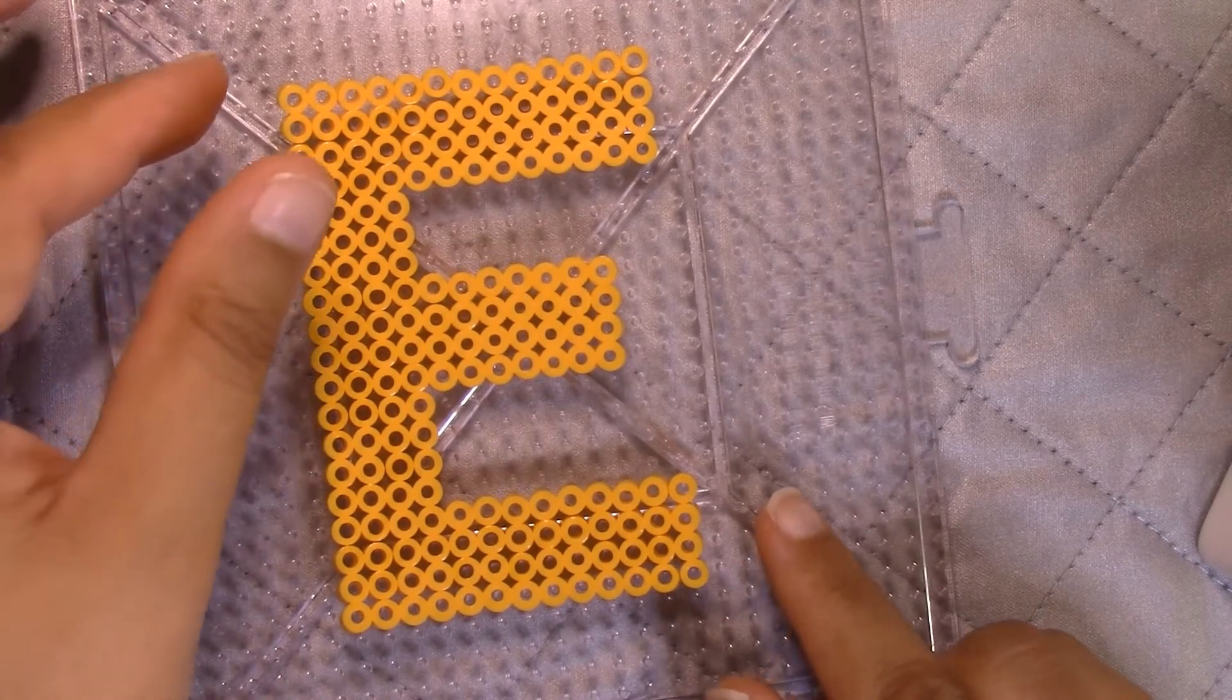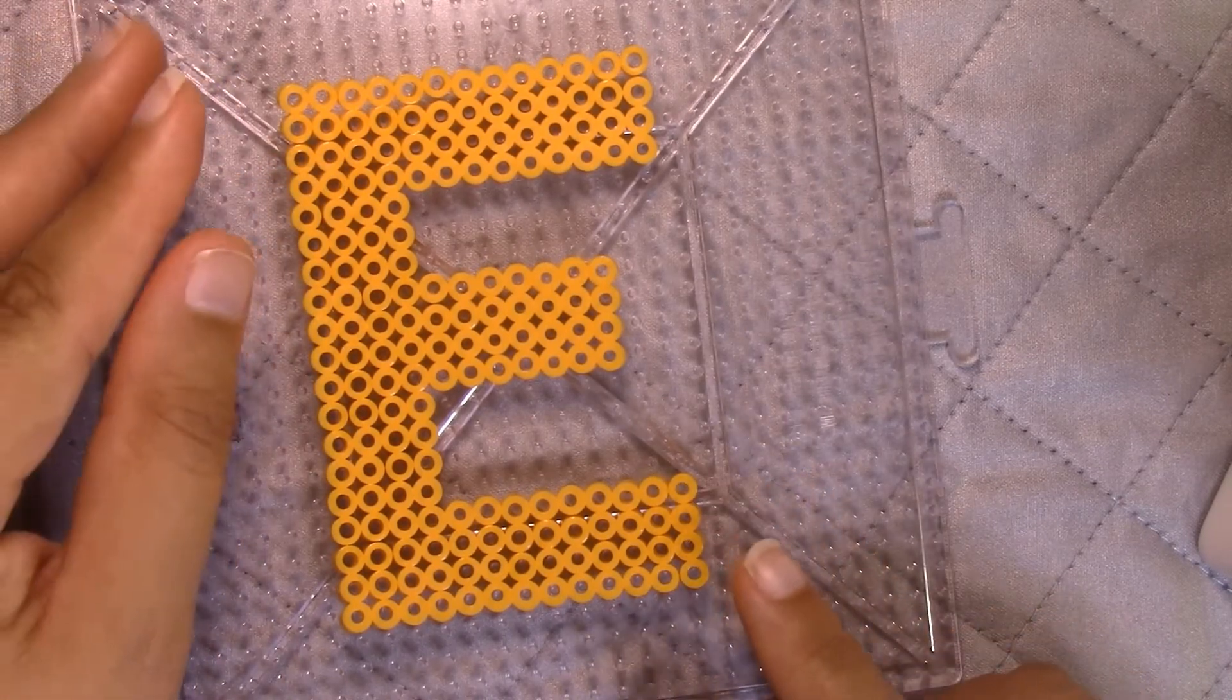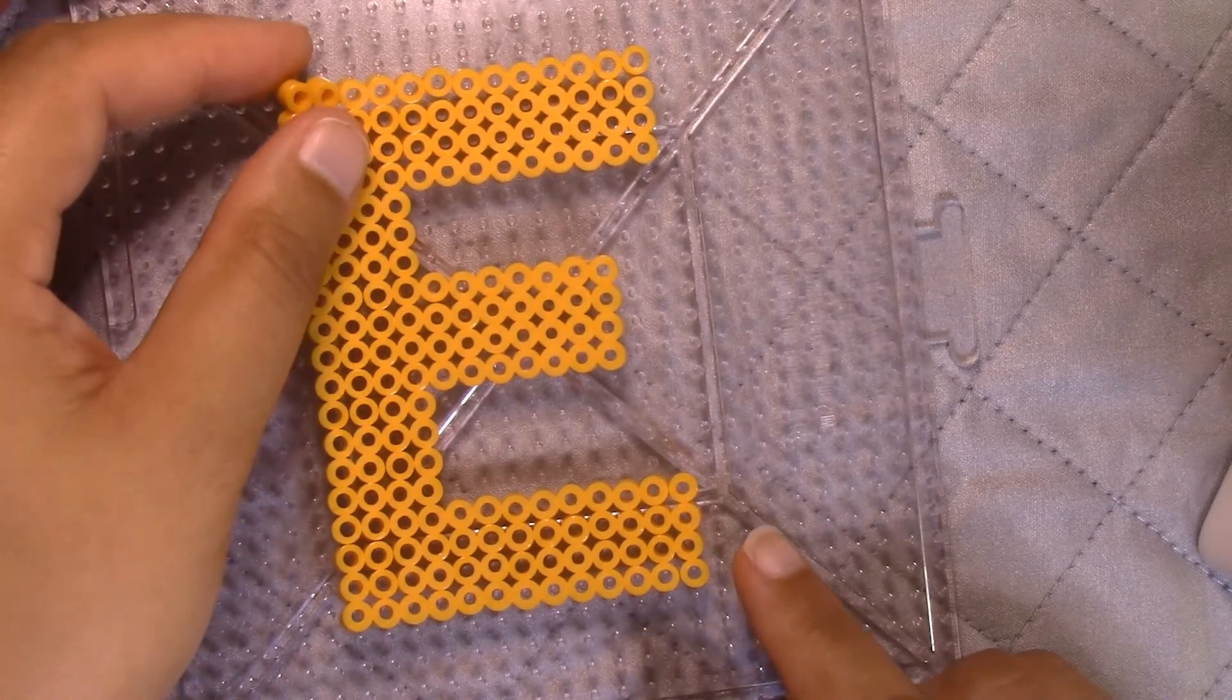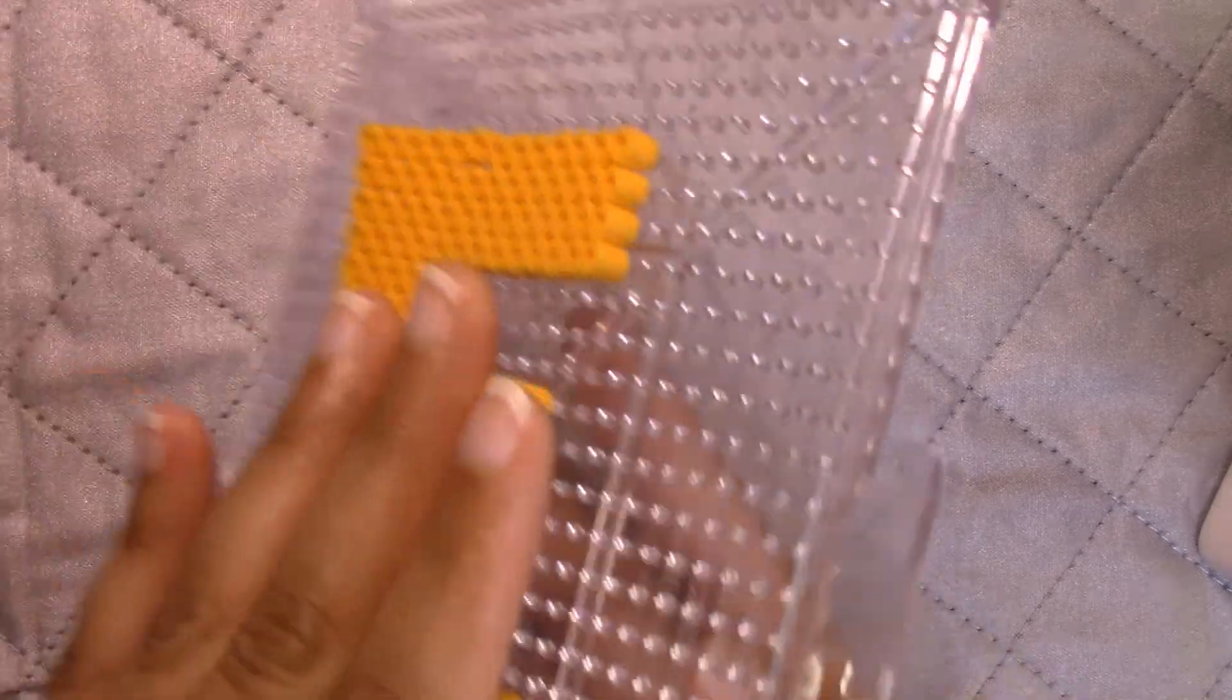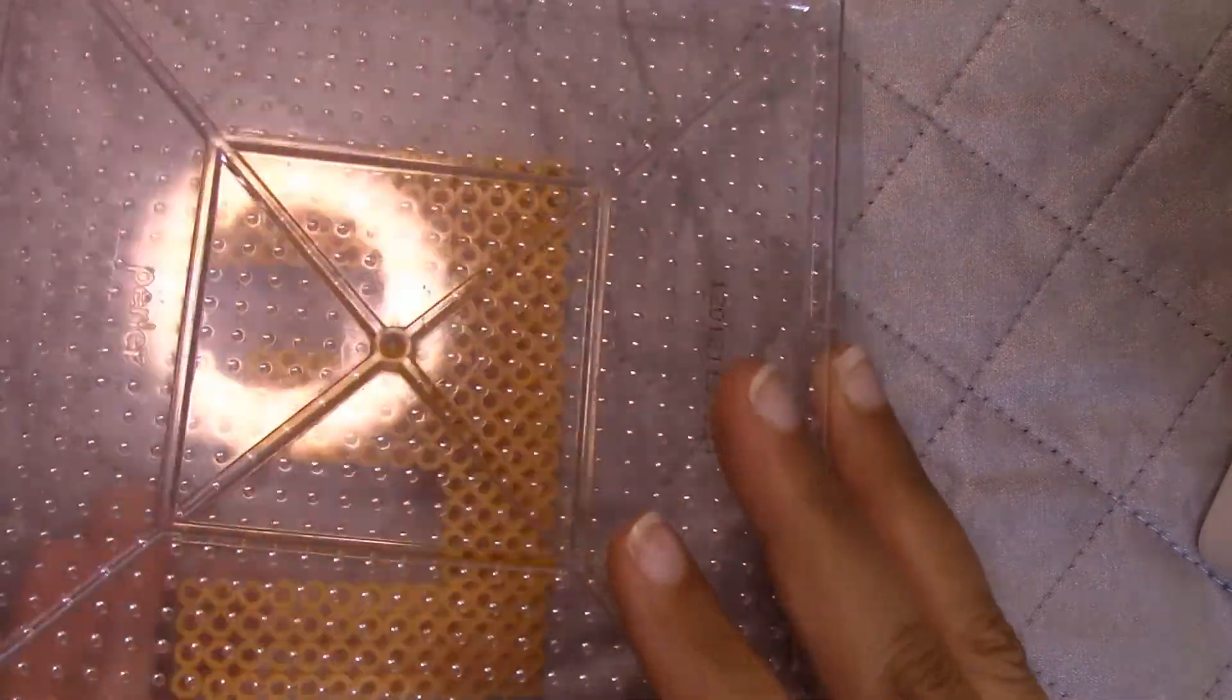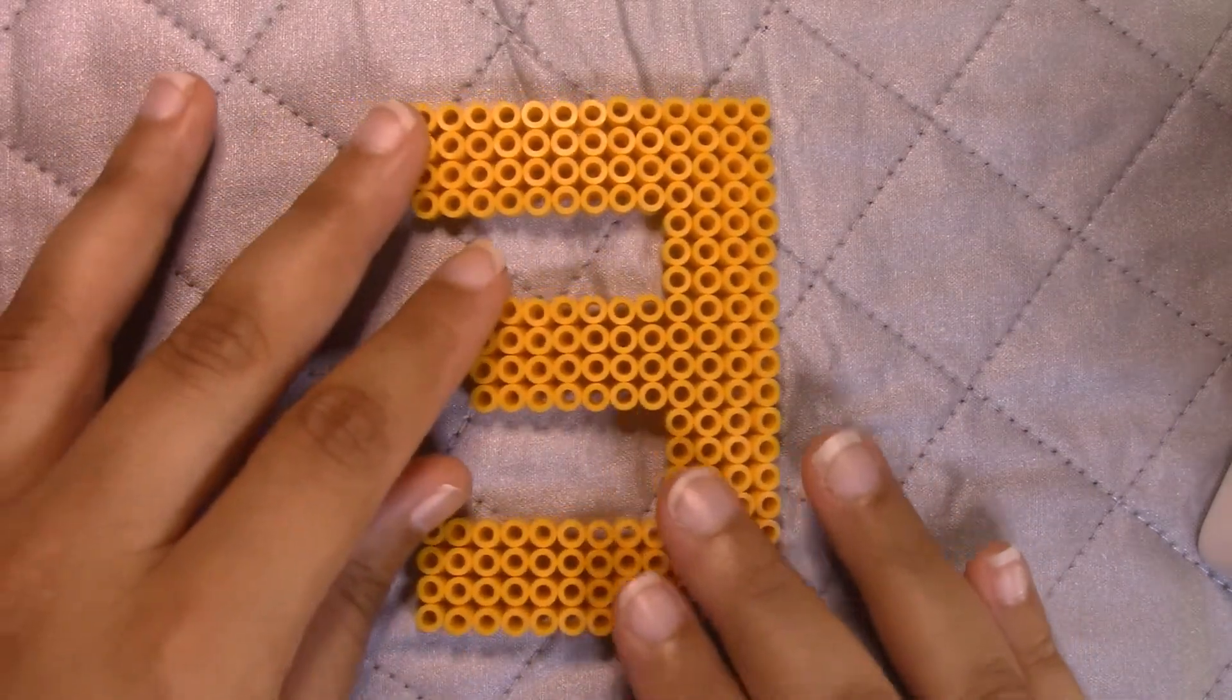Be careful when grabbing the letter because it's going to be very warm. So either let it sit for a moment so it can cool off and then you can pick it up, or I just take my grid and flip it over. And then you can put the grid on the side.